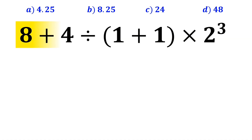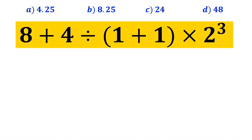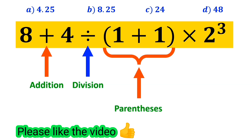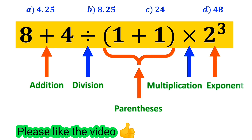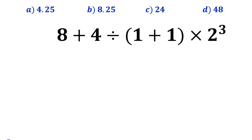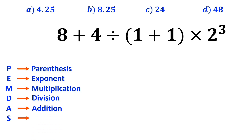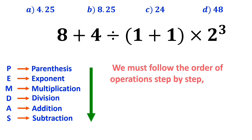Now let me show you how to solve this expression properly. As you can see in the image, this expression has an addition sign, then a division sign, followed by parenthesis, then a multiplication, and finally an exponent. To solve this problem, we must follow the PEMDAS rule: P stands for parenthesis, E stands for exponent, M stands for multiplication, D stands for division, A stands for addition, and S stands for subtraction. We must follow the order of operations step by step from top to bottom.